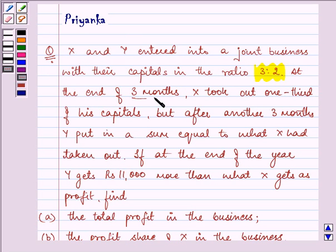At the end of 3 months X took out one-third of his capital, but after another 3 months Y put in a sum equal to what X had taken out. If at the end of the year Y gets 11,000 more than what X gets as profit,